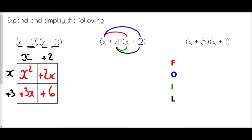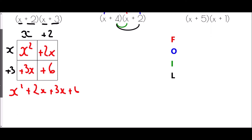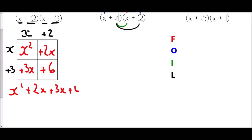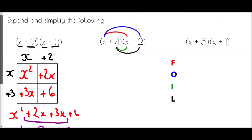So we've ended up with x squared plus two x plus three x plus six. The expansion is complete, but the question also asks us to simplify by collecting like terms. x squared is the only x squared; two x plus three x is five x; and plus six. So our simplified answer is x squared plus five x plus six.